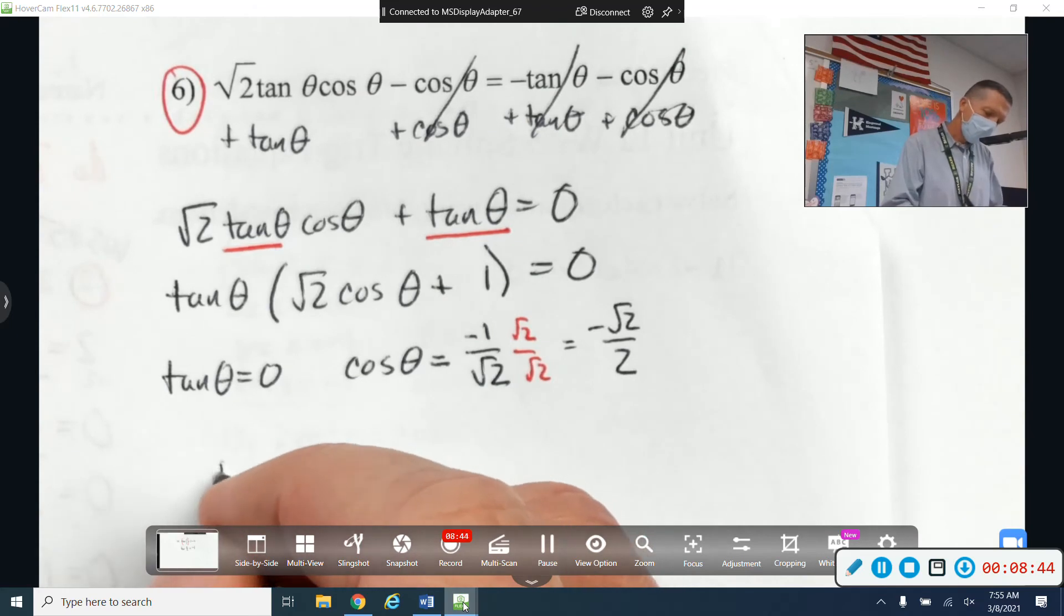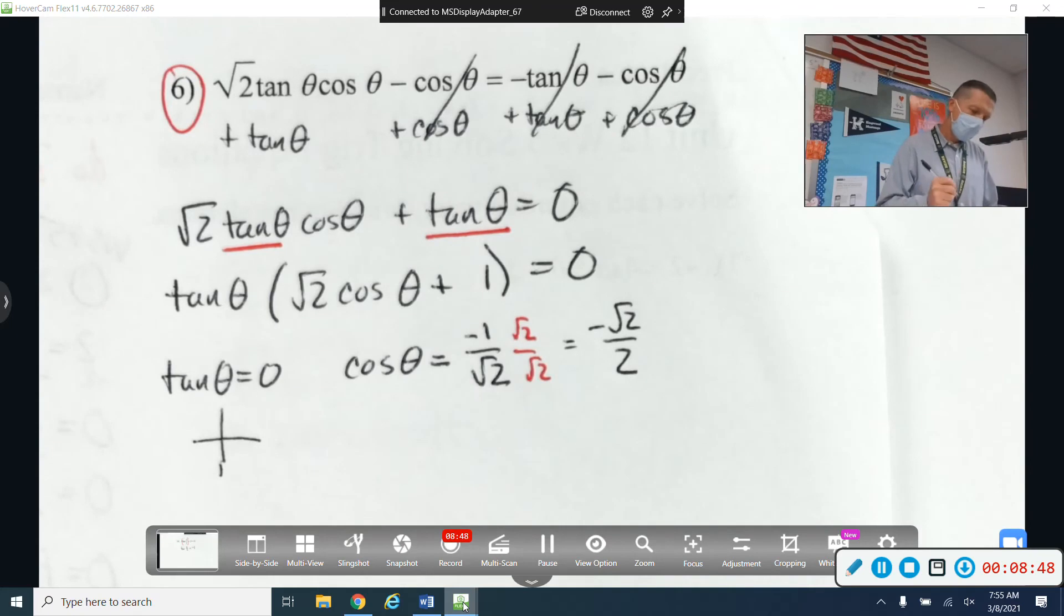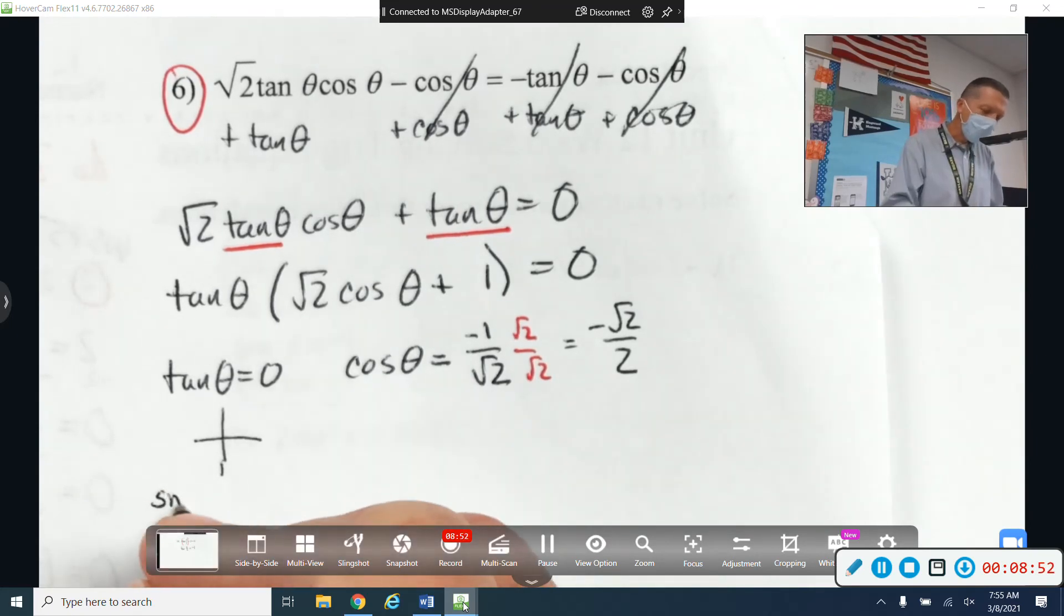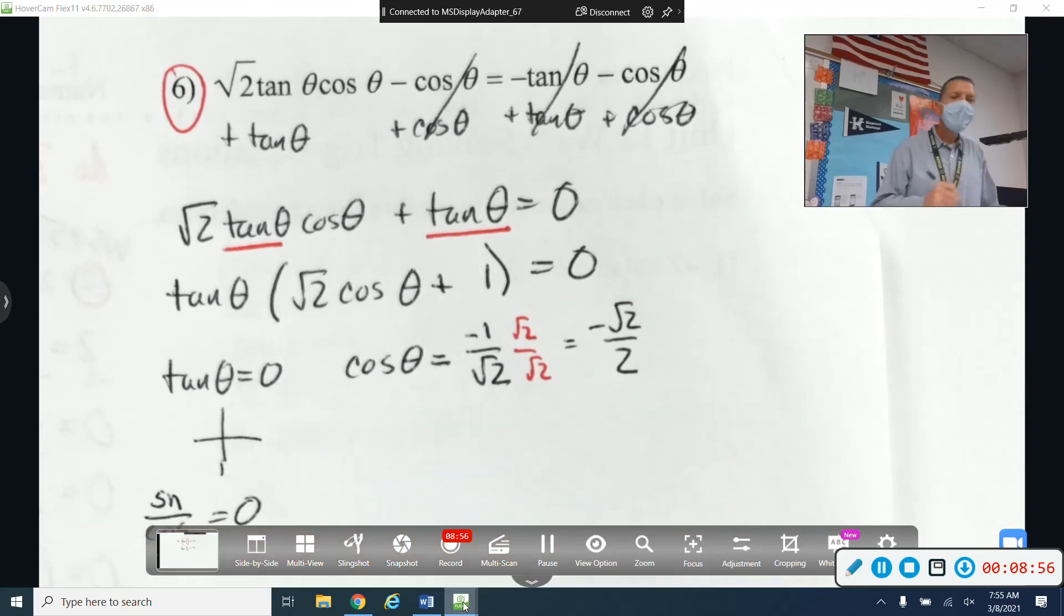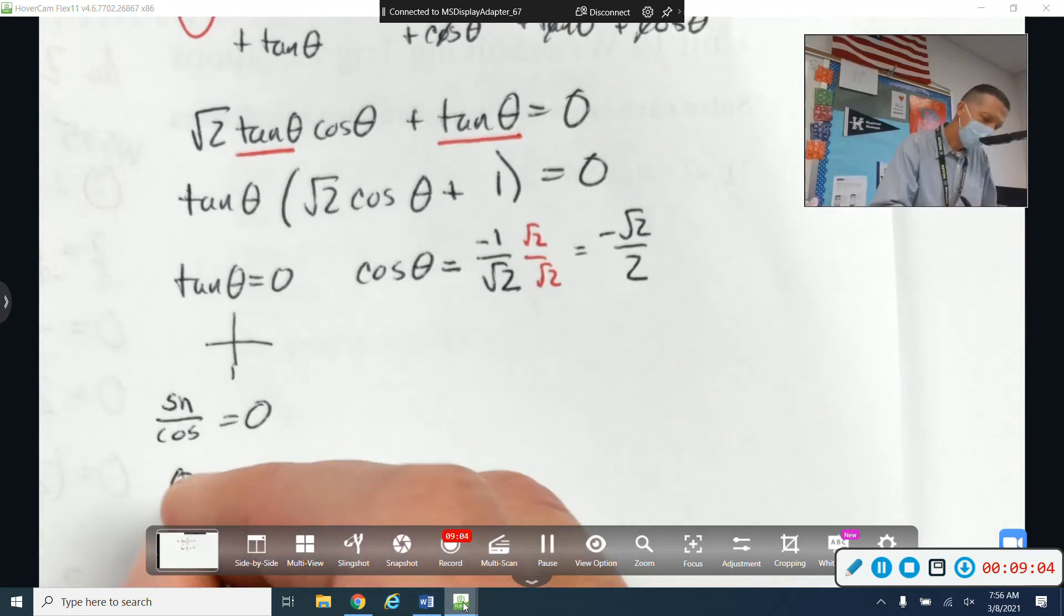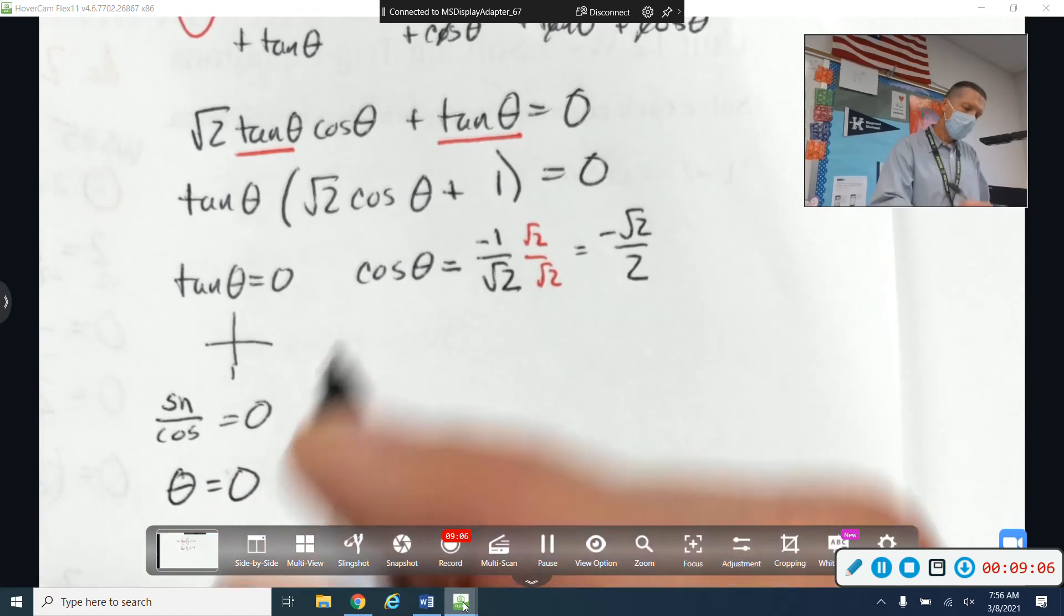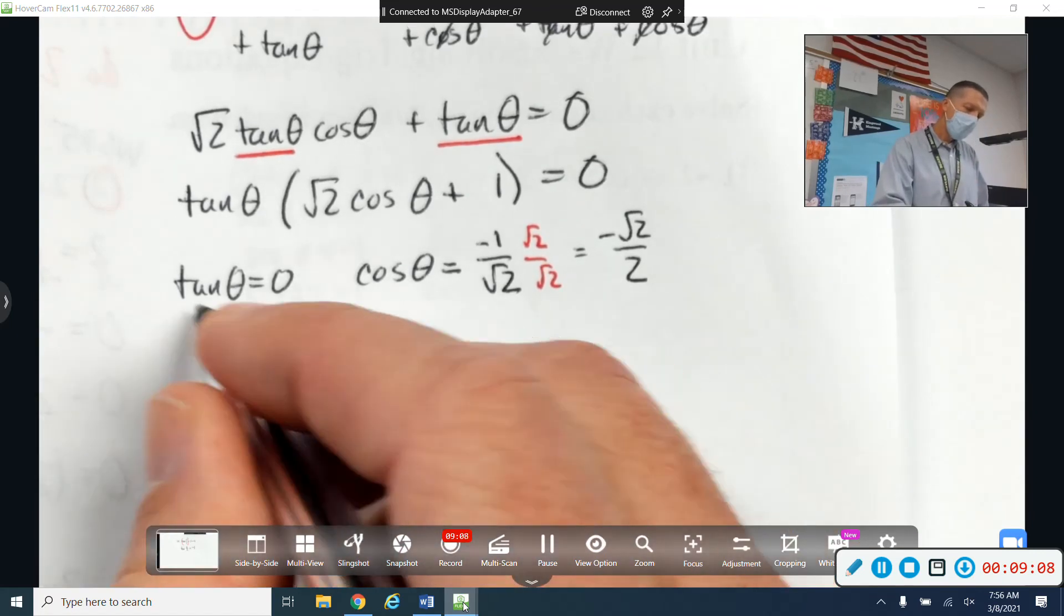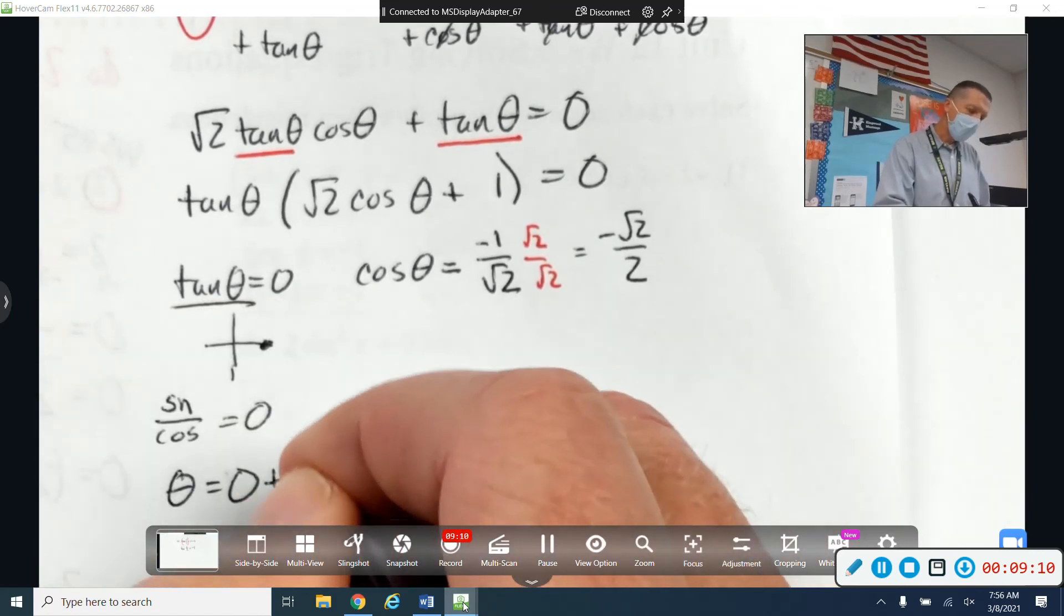All right. So tangent equal to zero. Let's see. I don't really have tangent stuff memorized, but I do know that tangent is sine over cosine. So what I really want to know is where sine is equal to zero. Because where sine is zero, then tangent would be zero. So that would be at zero. And for tangent, I just need the plus pi k to get all of them.